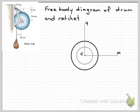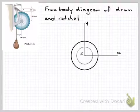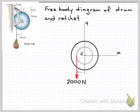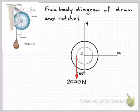So now that we've drawn the body we can start adding in our loads. So the load that we have in this case is the 2000 newton force acting downwards onto the drum. And we can also add in some dimensions there. So just note that it's located 100 millimetres from the centre C.